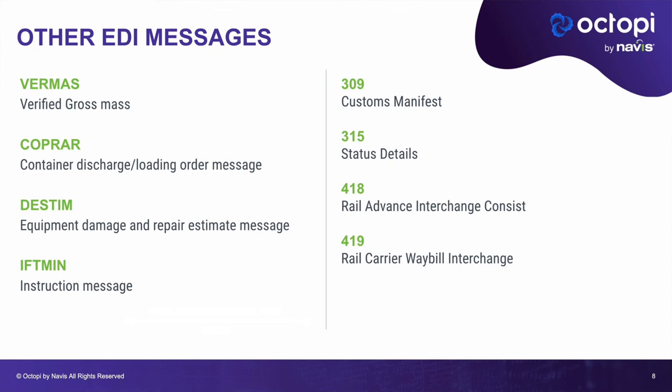The 315 is actually one of the tougher messages to deal with because people interpret and use it in so many different ways. If your terminal is a rail terminal, you might also be getting the 418 message — a Rail Advanced Interchange Consists — which tells you the configuration, the rail cars, and platforms of the train coming to your terminal and which containers are on each platform. Usually that comes along with a 419 message, which provides additional information such as the carrier waybill for containers on the train. The 418 and 419, and most of these ANSI-X12 messages, are far more common in the United States — outside the US you typically do not see them, and around rail you see different standards in Europe or Asia.